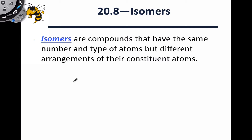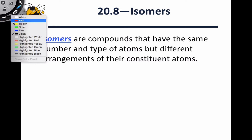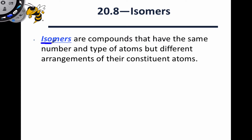Coordination complexes are some of the most structurally complicated molecules we've looked at so far. To help us make sense of some of this structural complexity and help us more easily compare related molecules, we can use the concept of isomerism. Isomers are defined as compounds that have the same number and type of atoms — that is, the same molecular formula — but different arrangements of those constituent atoms.